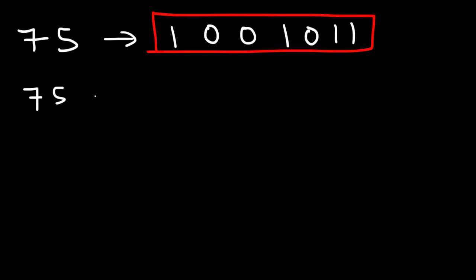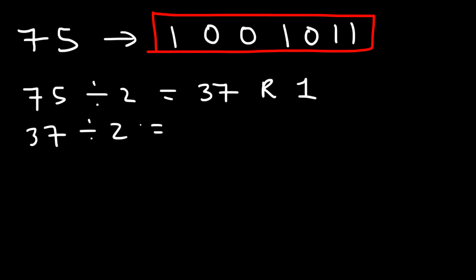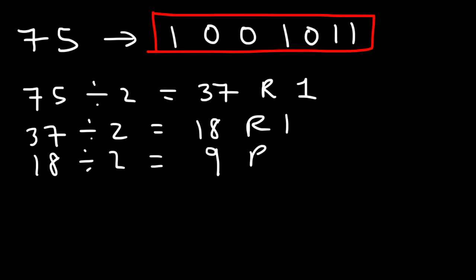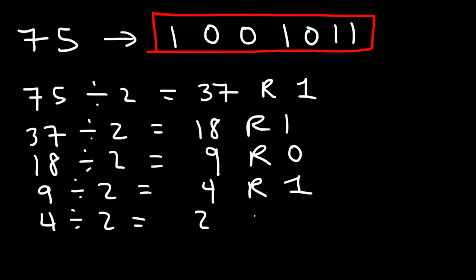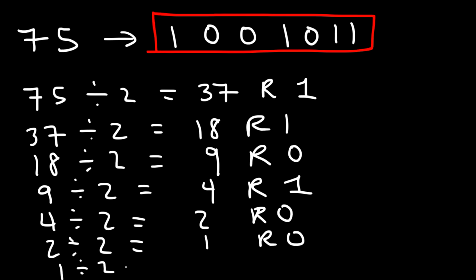Here's what we need to do: start with 75 and divide it by 2. 75 divided by 2 is 37.5, so that's 37 remainder 1. Now take the 37 and divide that by 2. 37 divided by 2 is 18.5, so that's 18 remainder 1. Then take the 18 and divide that by 2. 18 divided by 2 is exactly 9, remainder 0. Then 9 divided by 2 is 4.5, so 4 remainder 1. 4 divided by 2 is exactly 2, so 2 remainder 0. Then 2 divided by 2 is 1, so 1 remainder 0. And finally, 1 divided by 2 is 0.5, so 0 remainder 1. And then we stop here.